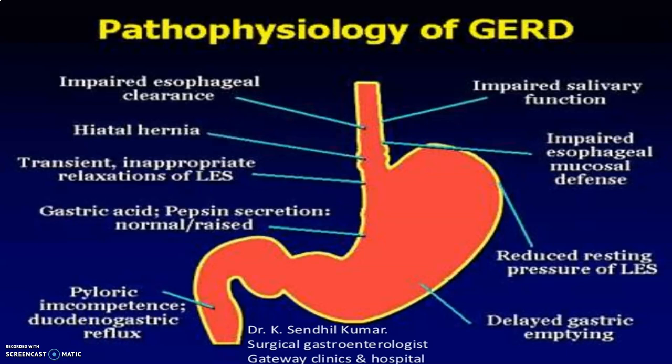Normally, the LES works in conjunction with the diaphragm. Symptoms are caused by backflow of gastric acid into the esophagus due to an incompetent barrier at the esophageal junction. The gastroesophageal junction has a zigzag appearance and is thus sometimes referred to as the Z line.